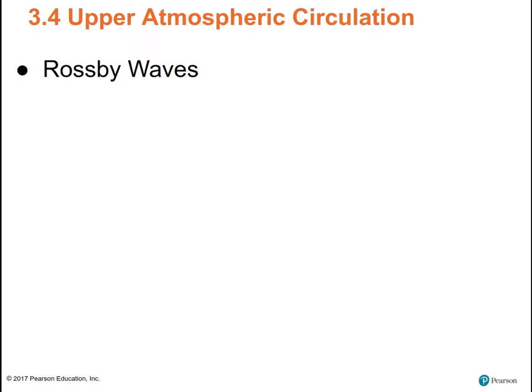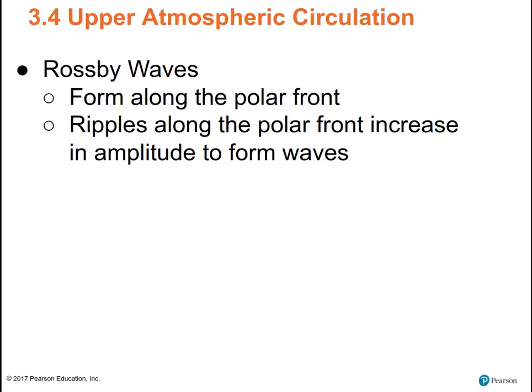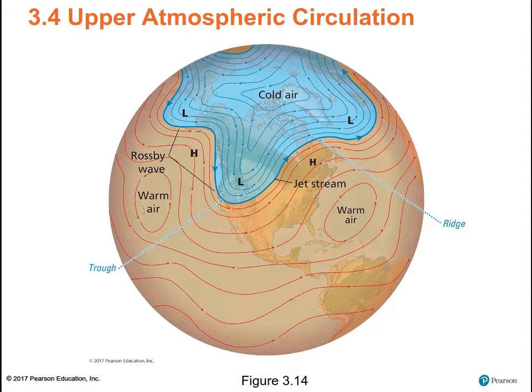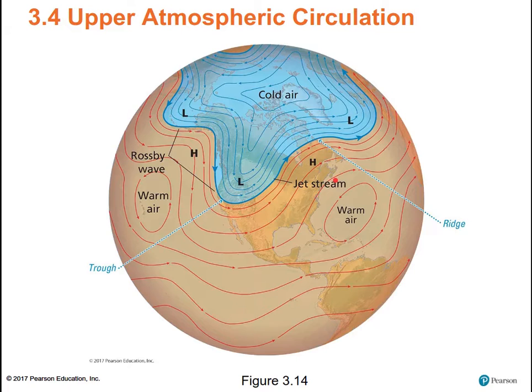Continuing on with the upper atmosphere: there are waves or ripples in the polar front called Rossby waves, and they turn out to be really important. They form along the polar front — the region where cold air is coming down and warm air is coming up; they don't mix, they collide and make the polar front. The storms we experience in wintertime are in these Rossby waves along the polar front. Above the polar front flies the jet stream, and wherever the jet stream goes, the Rossby waves go. Weather forecasters pay attention to the jet stream because it determines where the Rossby waves go.